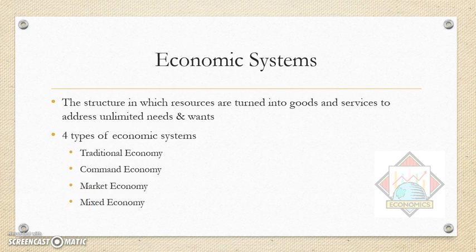Let's begin with the definition of an economic system. An economic system is the structure in which resources are turned into goods and services to address unlimited needs and wants. An economic system is how a nation or state allocates its resources in society, as well as how goods and services are produced and exchanged.